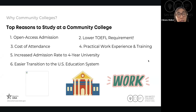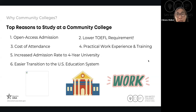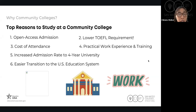Along with open access admission, community colleges also have lower TOEFL or English proficiency requirements. This is one of the major barriers for international students — they have to take TOEFL, IELTS, and other English tests and meet a certain level. Many community colleges still have some English proficiency requirement, but it tends to be significantly lower than at four-year universities. Getting the English proficiency requirement met and applying to community colleges is much simpler and easier than doing so for a four-year university.